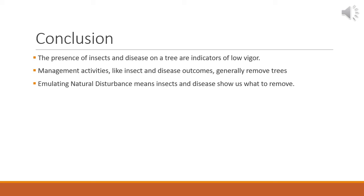So to conclude, there are really three important concepts. The first is that the presence of insects and disease on a tree are a strong indicator of lowered vigor. The second is that management is generally the removal and planting of new trees, and this is a process that inadvertently mimics mortality and disturbance from insects and disease. And last, emulating natural disturbance means that insects and disease are showing us what to remove.